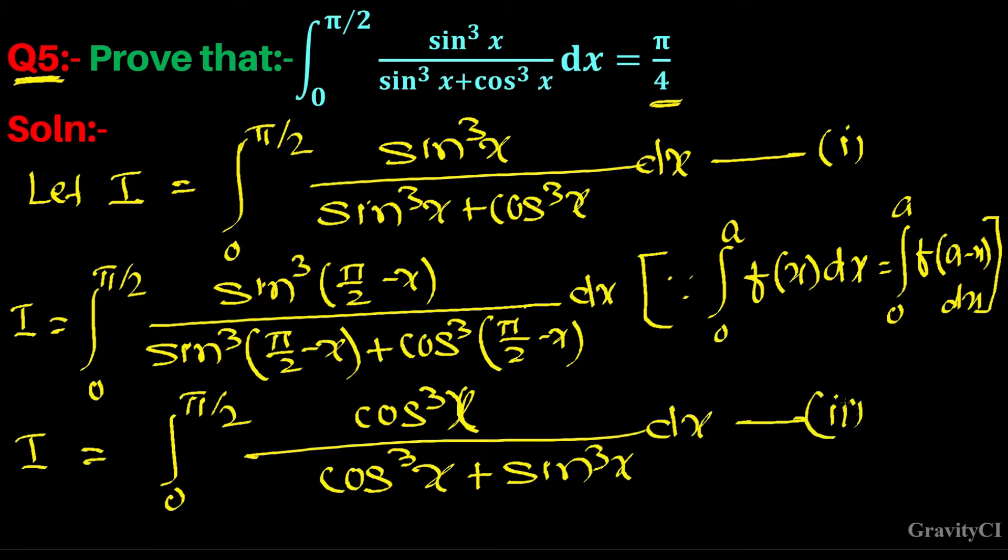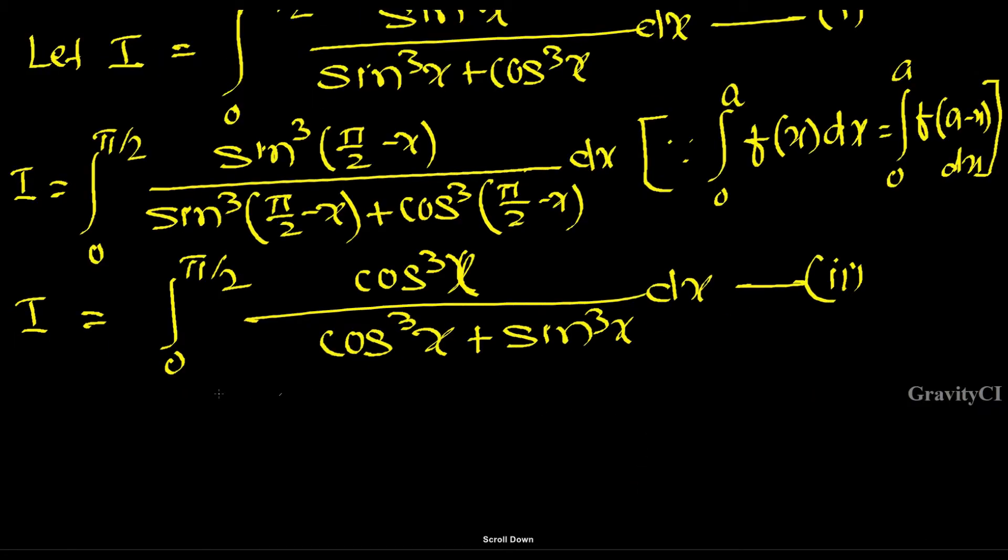And now we will add first and second equation. Adding equation first and second, so we get 2I.